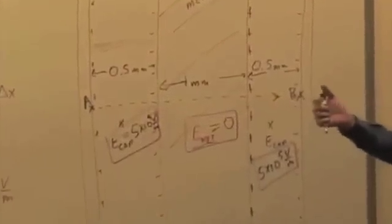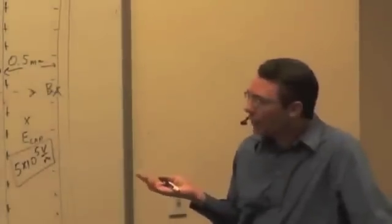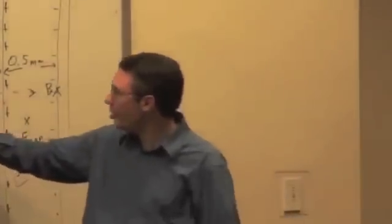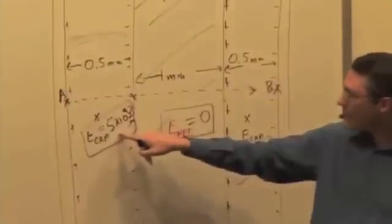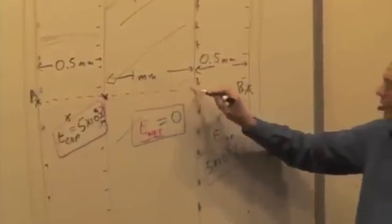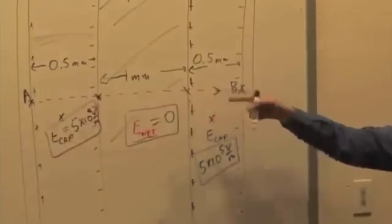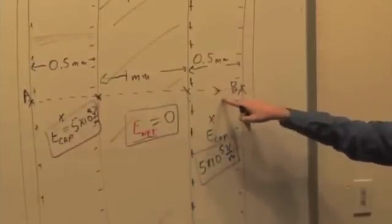As you traverse the imaginary path, you cross through three different regions of uniform field, differing uniform field. From A to this surface, it's 500 volts per meter. But then across this one millimeter distance, it's zero. And then it's back to five times ten to the fifth volts per meter again.